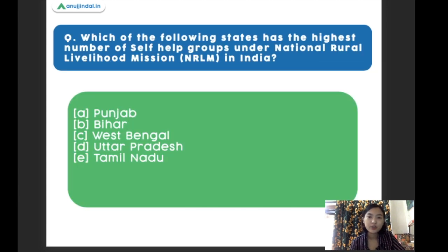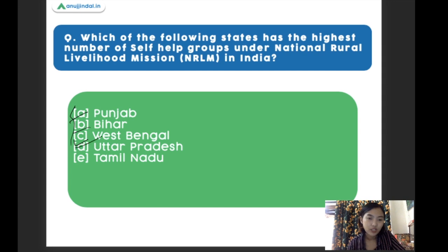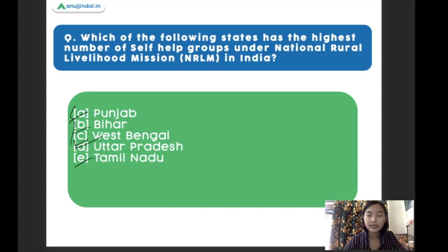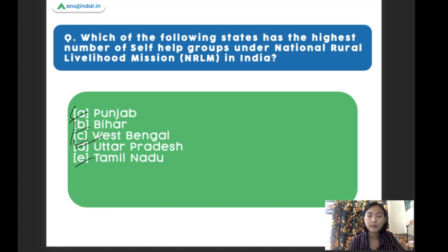Which of the following states has the highest number of self-help groups under the National Rural Livelihood Mission? The options are Punjab, Bihar, Bengal, Uttar Pradesh, and Tamil Nadu. The right answer is Bihar. Bihar has the highest number of self-help groups under the National Rural Livelihood Mission.